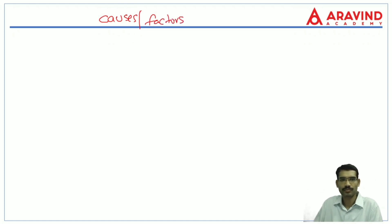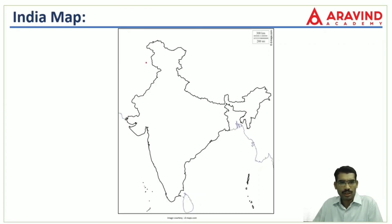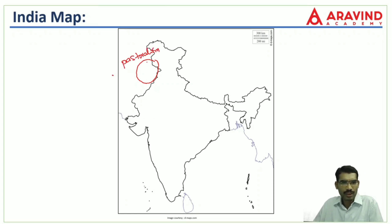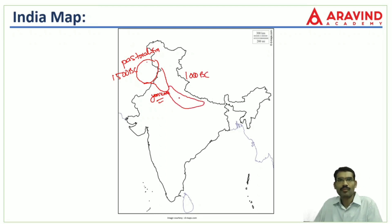The causes or factors that favored the emergence of these towns and subsequently larger kingdoms: in the early Vedic period around 1500 BC, the main economic activity in the zone of settlement was pastoralism. Settlements gradually extended up to the Yamuna river. After 1000 BC, the people moved to the Ganga Valley and settled there.